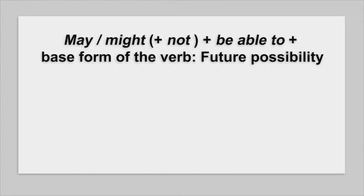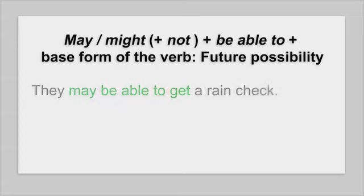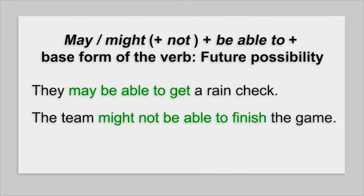We can also use the modal may or might with be able to and the base form of the verb to talk about future possibility. For example, they may be able to get a rain check. The team might not be able to finish the game. I hope it doesn't rain and my parents can go to the game.